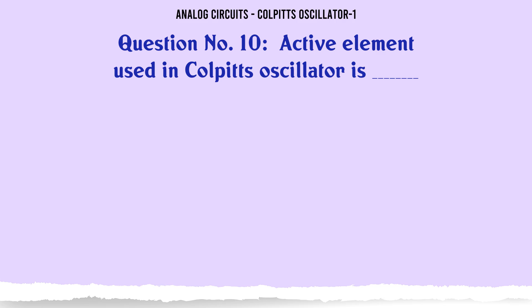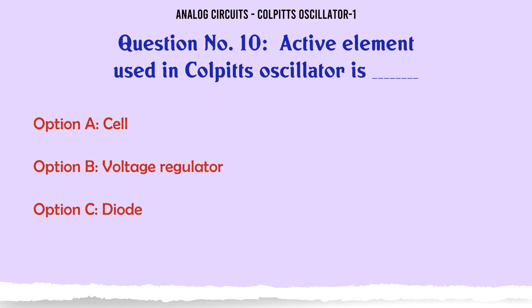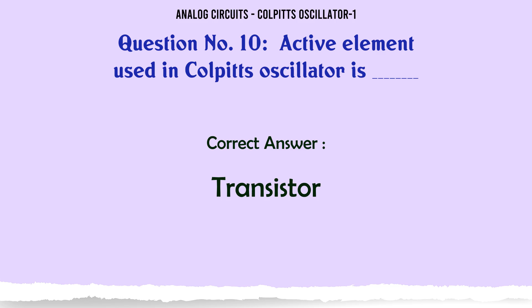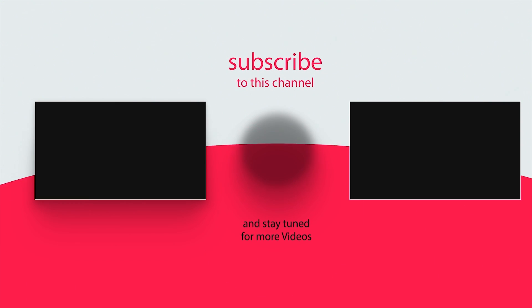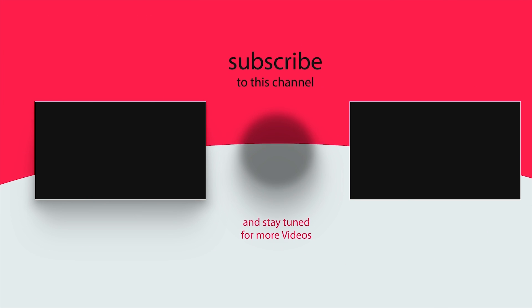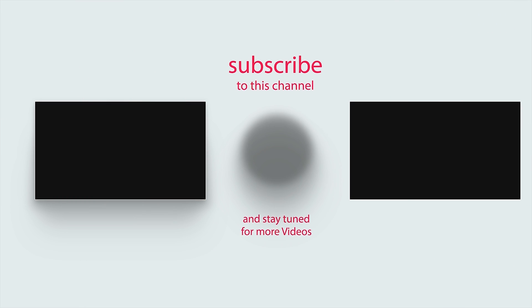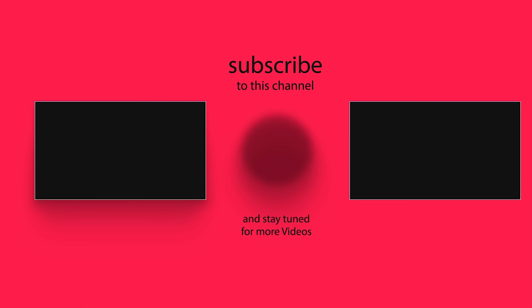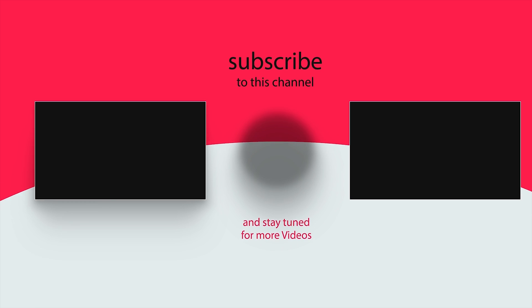The active element used in Colpitt's oscillator is: A) Cell, B) Voltage regulator, C) Diode, D) Transistor. The correct answer is: Transistor. Thank you.